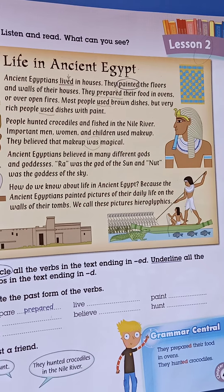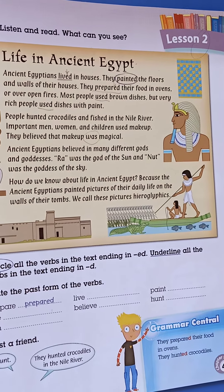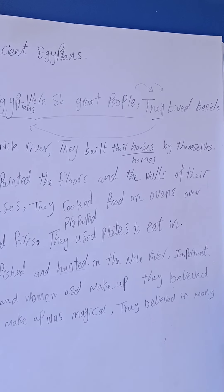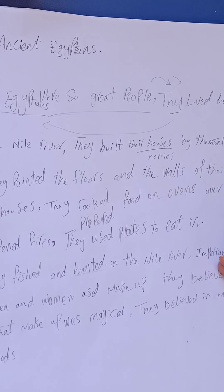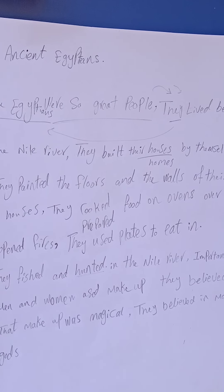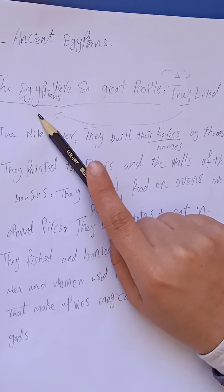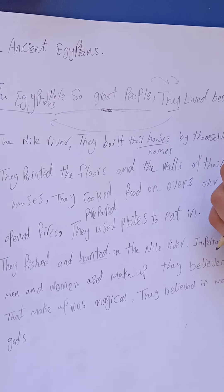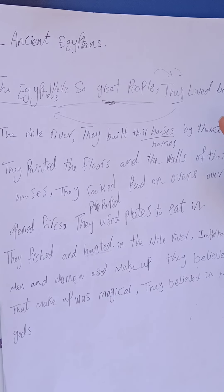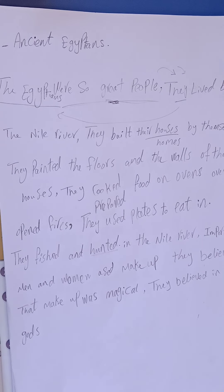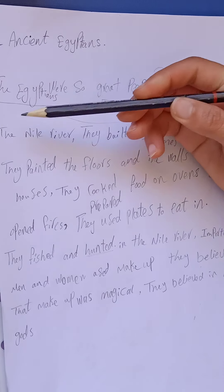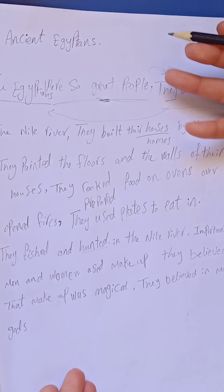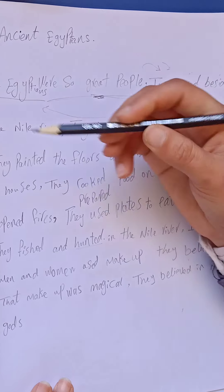I know that you've written paragraphs like this before, but I need you to write a paragraph again about the life in ancient Egypt — over seven sentences. I can use many sentences. For example: 'The ancient Egyptians were great people.' They were wonderful. 'They lived beside the Nile River.' Now I will start describing their life — they lived beside the Nile River.